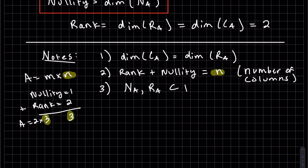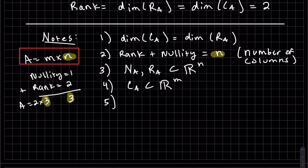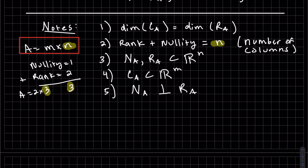These are both subsets of our N. And this is a new fact. The row space and the null space are perpendicular to each other, which means their dot products are zero.